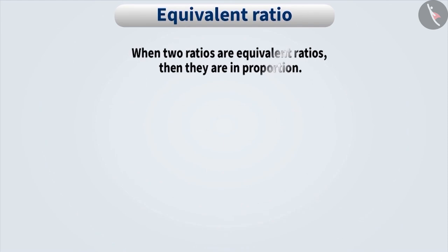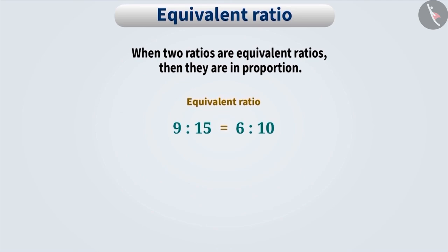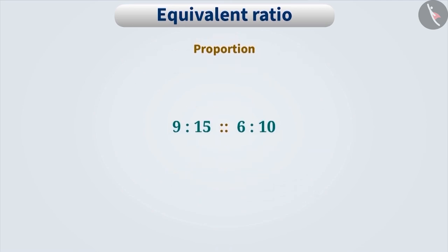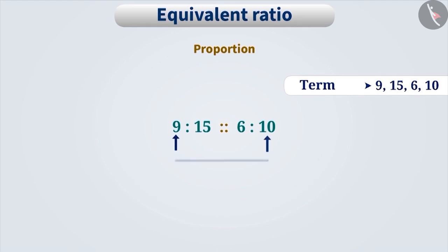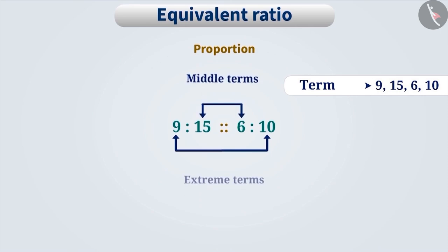If two ratios are equivalent ratios, then they are in proportion. For example, since 9 is to 15 and 6 is to 10 are equivalent ratios, they are proportionate, expressed as 9 is to 15 is in proportion to 6 is to 10, or with a double colon. In any statement of proportion, four numbers are expressed in order — these are called terms. The first and fourth terms are called extreme terms, while the second and third terms are called middle terms.